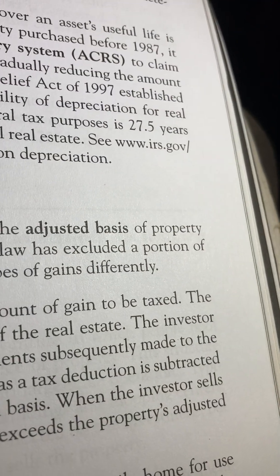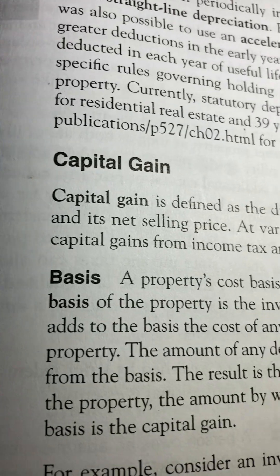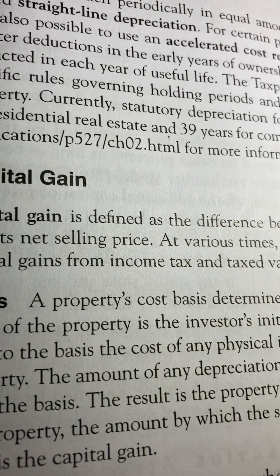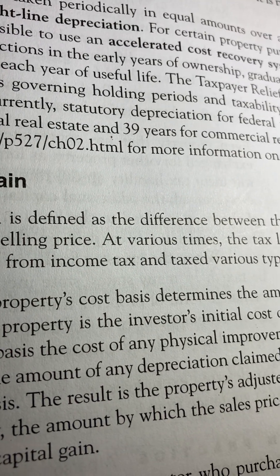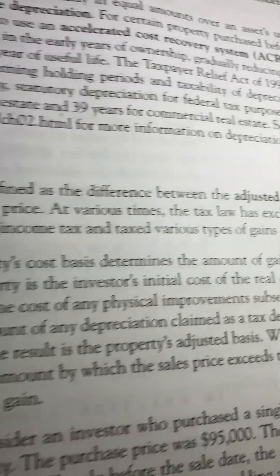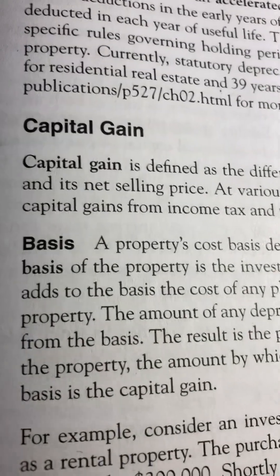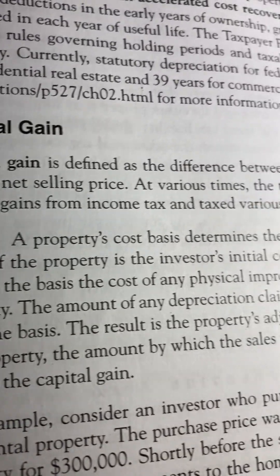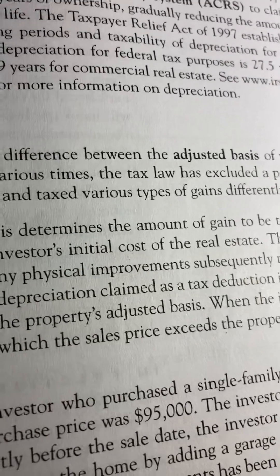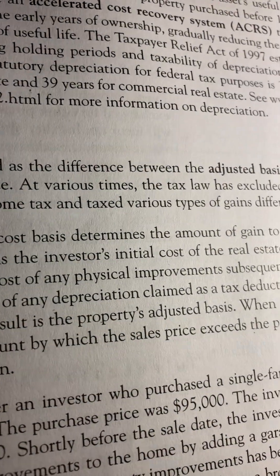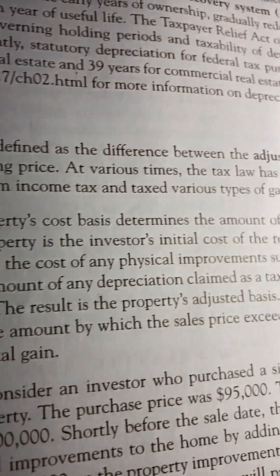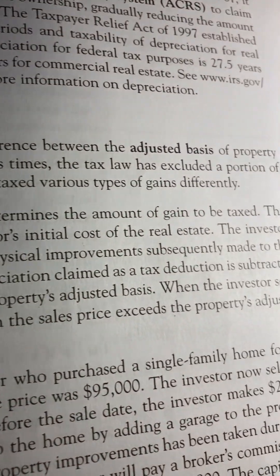Capital gain is defined as the difference between the adjusted basis of property and its net selling price. At various times, the tax law has excluded a portion of capital gains from income tax and taxed various types of gains differently.